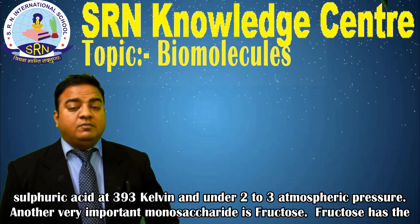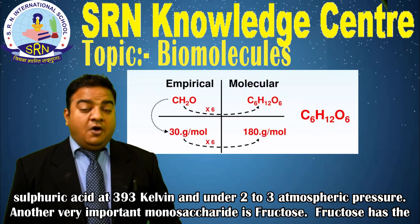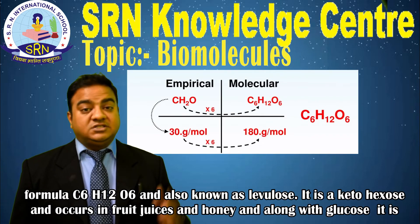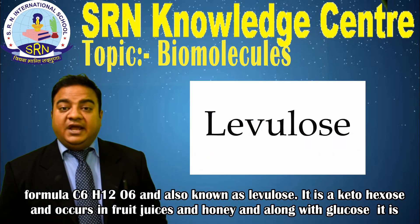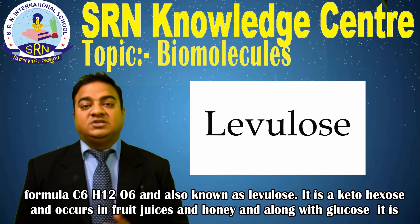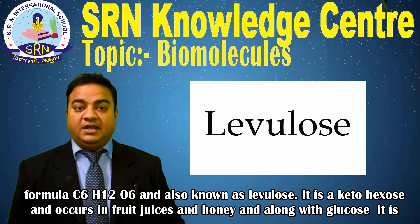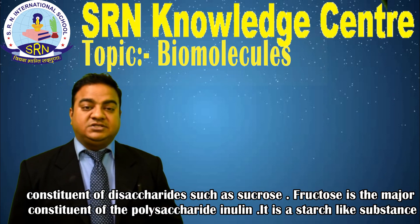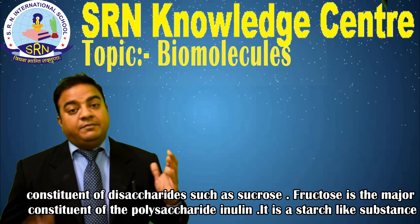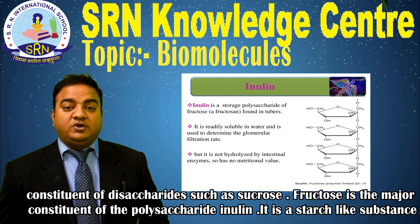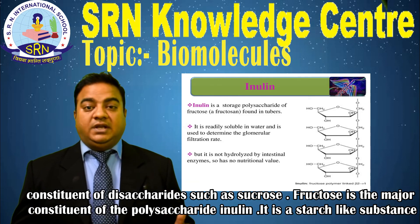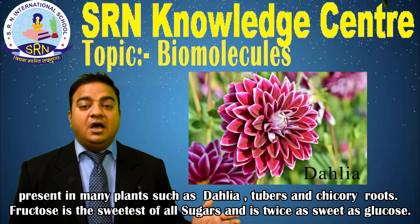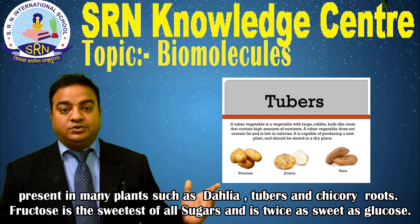Another very important monosaccharide is fructose. Fructose has the molecular formula C₆H₁₂O₆ and is also known as laevulose. It is a ketohexose and occurs in fruit juices and honey. Along with glucose, it is a constituent of the disaccharide sucrose. Fructose is also the major constituent of the polysaccharide inulin, a starch-like substance present in many plants such as dahlia tubers and chicory roots.